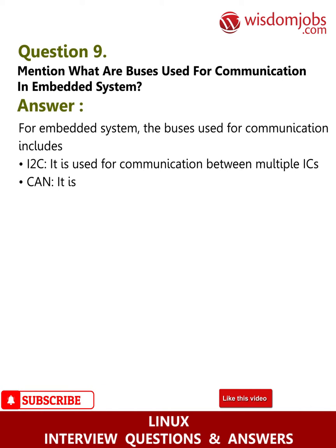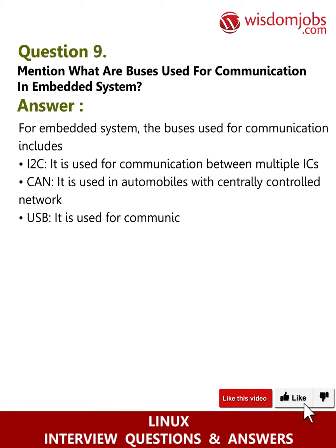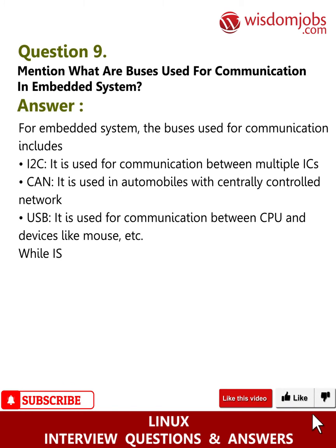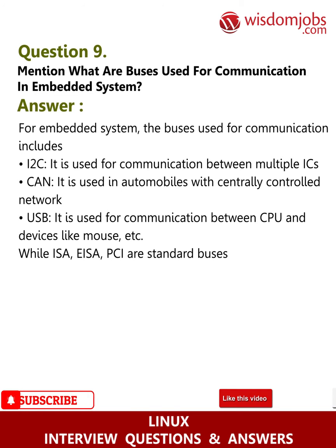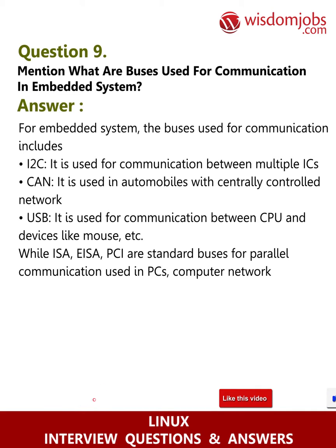CAN, which is used in automobiles with centrally controlled networks. USB, which is used for communication between the CPU and devices like a mouse. ISA, SPI, and PCI are standard buses for parallel communication used in PCs, computer network devices, etc.